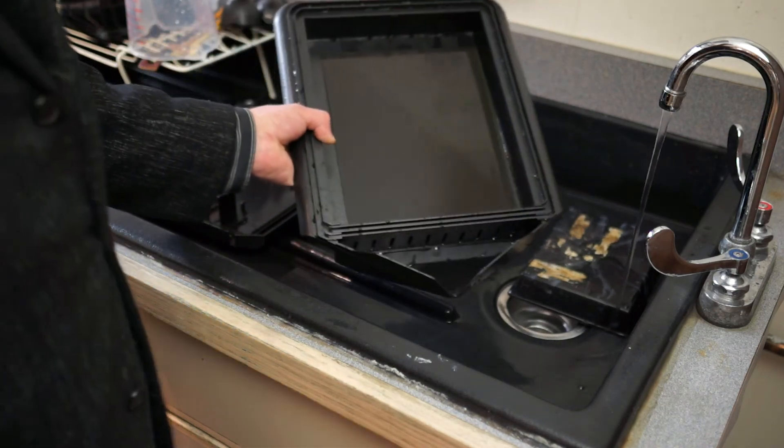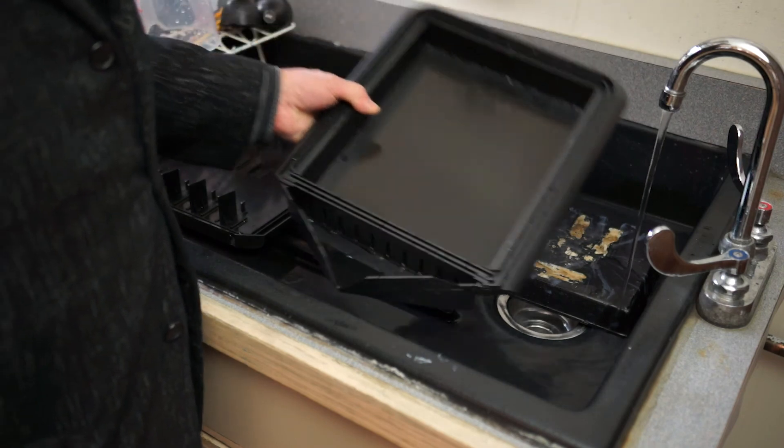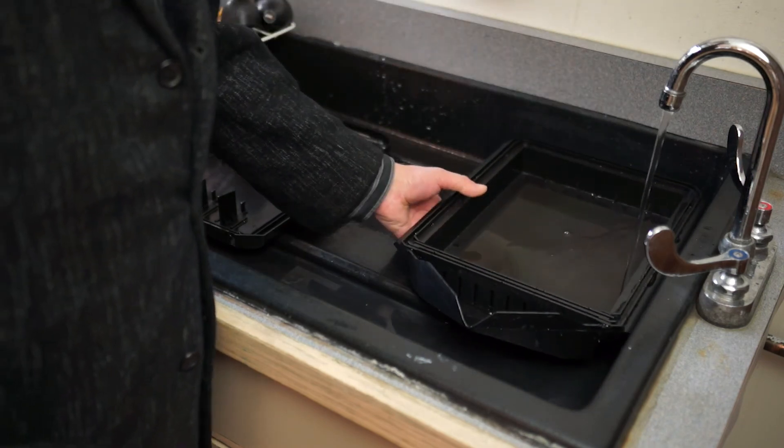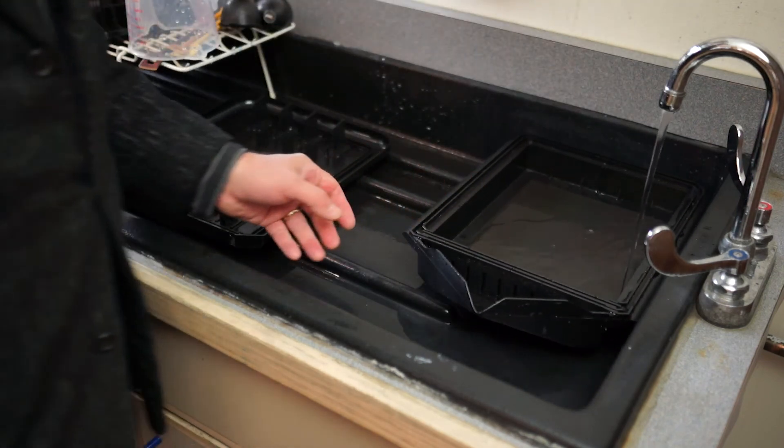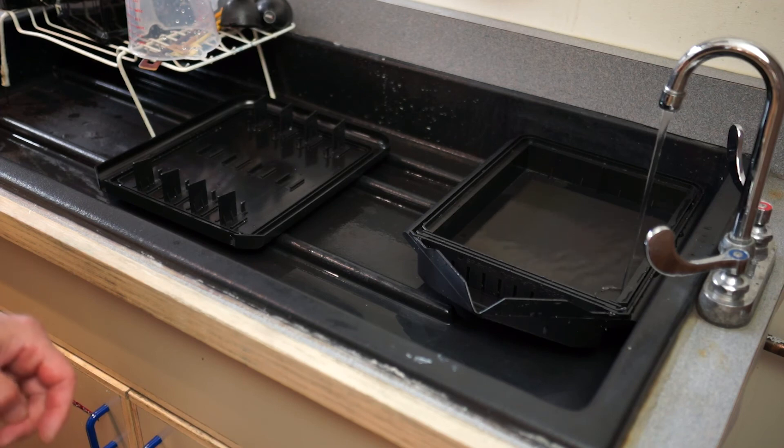After the one minute, pour the hypo wash down the drain. And again, just have running water through the tray for five minutes. And you might want to dump out the tray once or twice during that five minutes to make sure you get a couple complete changes of water.